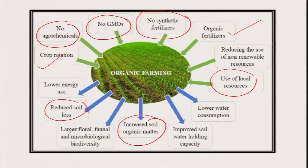Similarly, we are also promoting use of different types of local resources. Every time you do not have to make compost or vermicompost, you cannot purchase from the market every time. You have local resources — maybe your wheat straw, rice straw, vegetable waste, jungle biomass, wheat biomass — all can be used after the composting method.